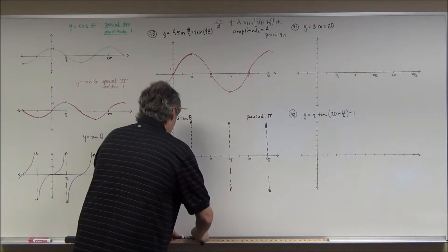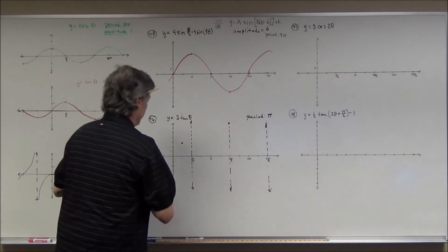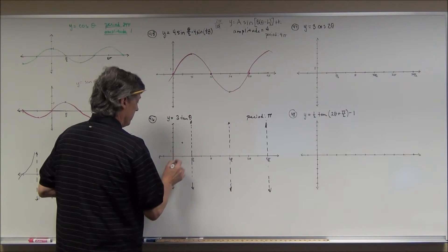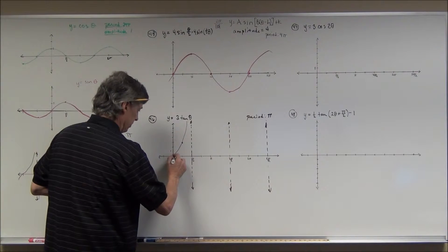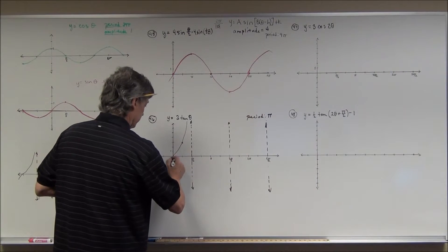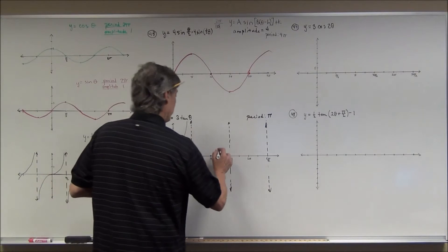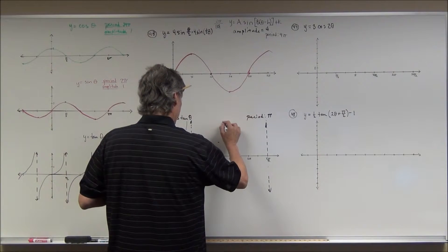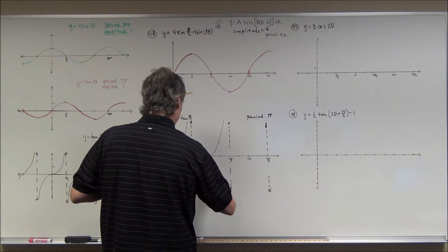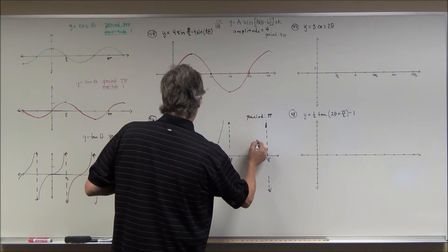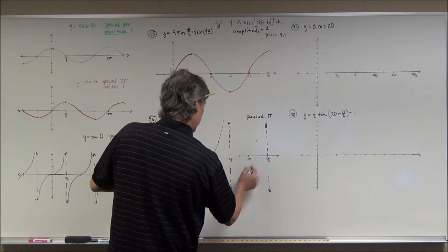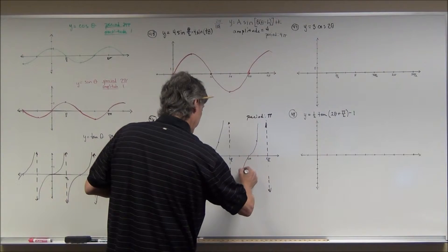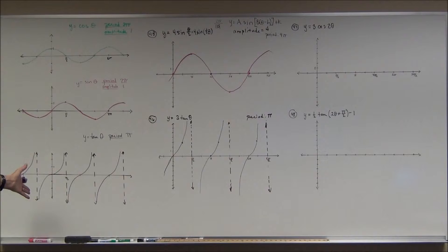If you plug in π/4, the tangent of π/4 is sine of π/4 over cosine of π/4, which equals 1, times 3 — so I'm way up here at 3 instead of at 1. My graph still goes through (0, 0) but is much steeper, almost skinnier looking, going from negative 3 to 3, with that characteristic tangent curve shape.